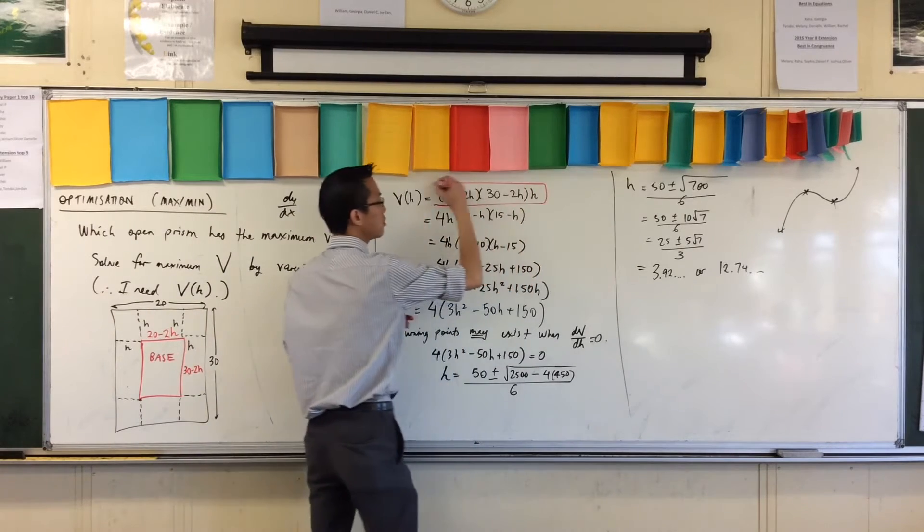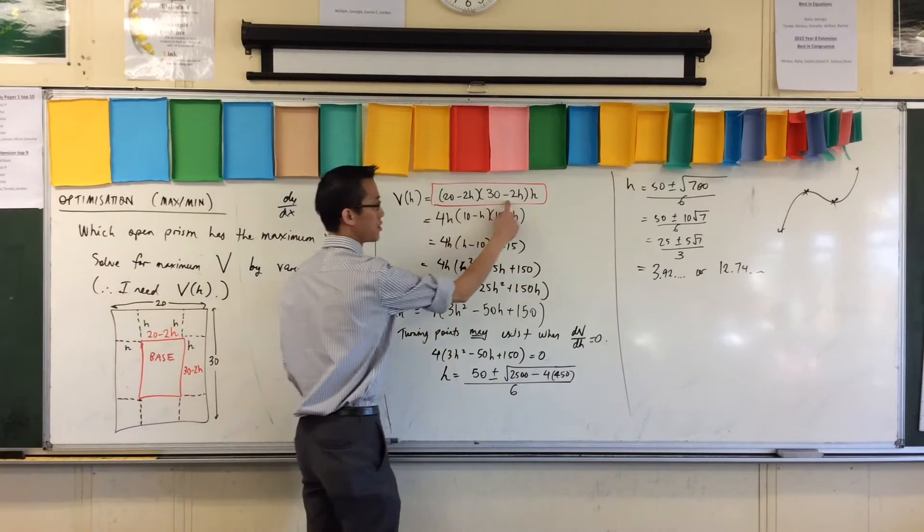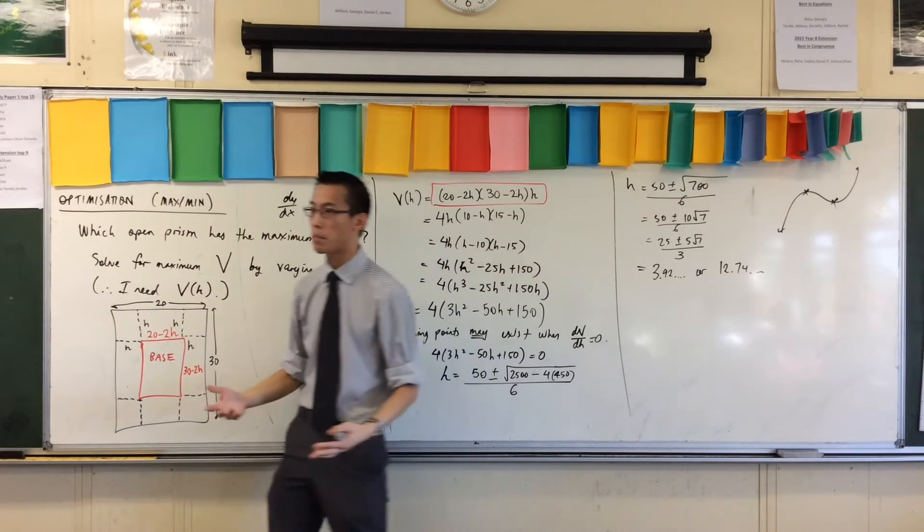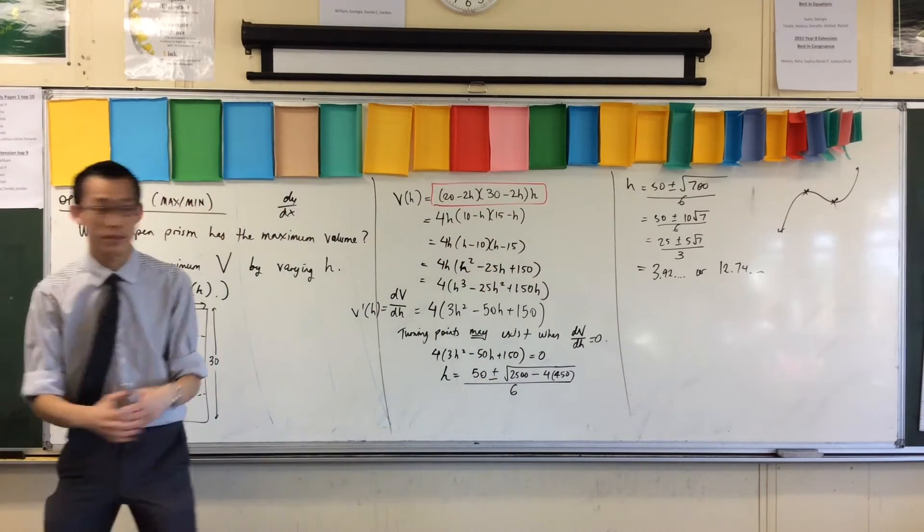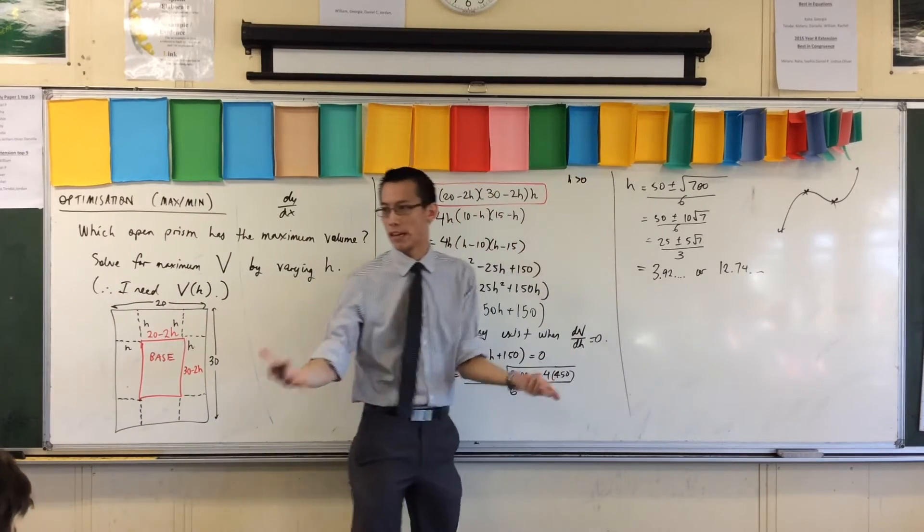In fact, you can even kind of see it here. Do you see there's a domain restriction implied by, even without common sense, you just look at this equation? Remember, 1, 2, 3, they all have to be positive because they're all lengths. Well, let's just have a look at this guy. H is going to be greater than 0. I mean, you already knew that.